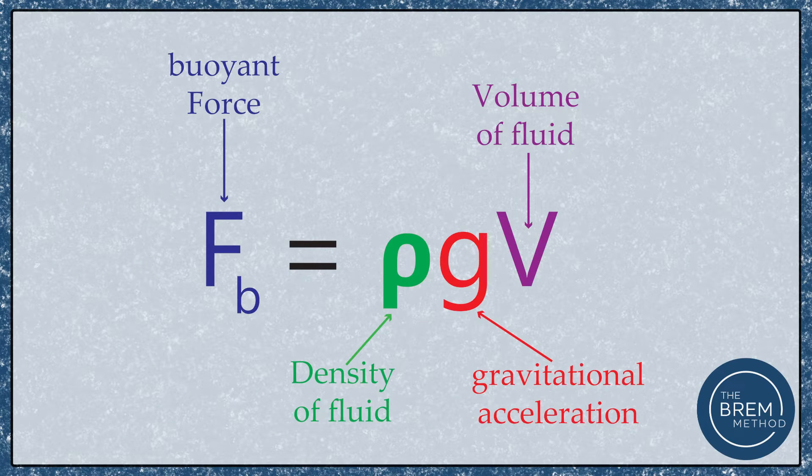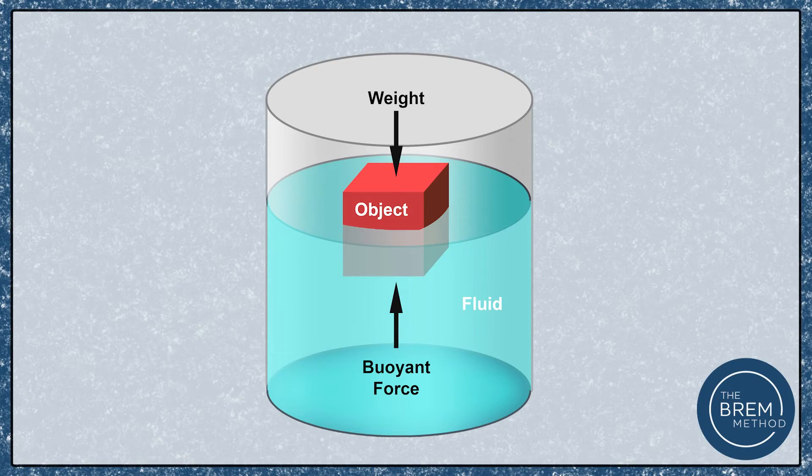The calculation for the buoyant force is: force equals the density of the fluid times the volume of the fluid displaced by the object, multiplied by gravity. We're able to use these two forces — the gravitational force of the object and the buoyant force of the fluid — to determine if that object is going to sink or float. These forces oppose each other: gravitational force pulls down while the buoyant force pushes up, so we can subtract them rather than add them together.